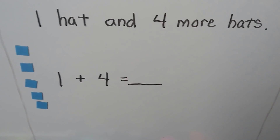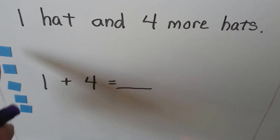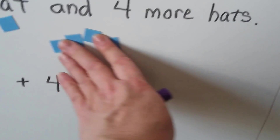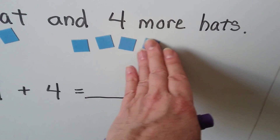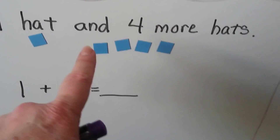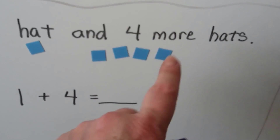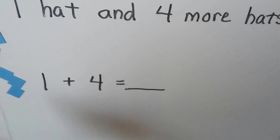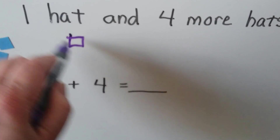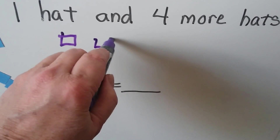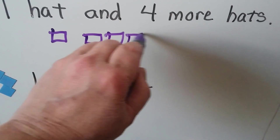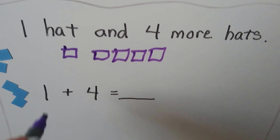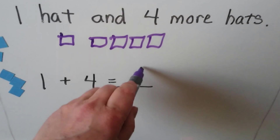One hat and four more hats. We can use counters — one counter for one hat, then four more counters for the four more hats — and add them all up: one, two, three, four, five. Or we could draw our own counters, even draw hats. One hat and four more: one, two, three, four, equals one, two, three, four, five. One plus four is equal to five.